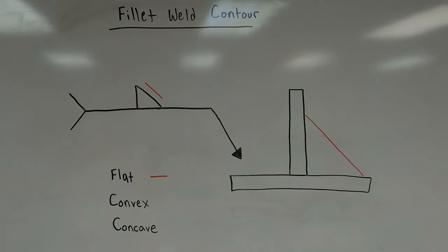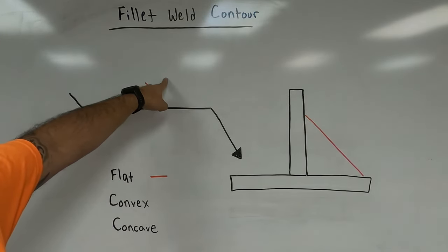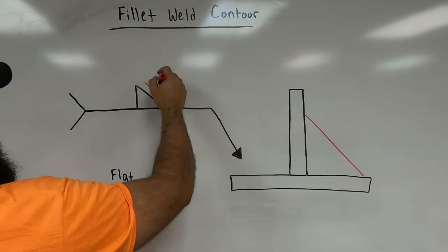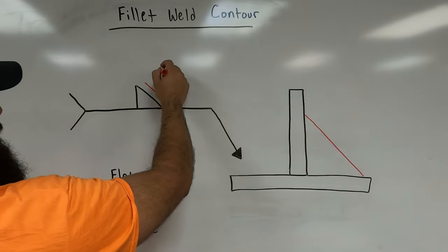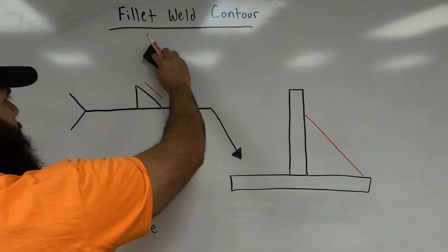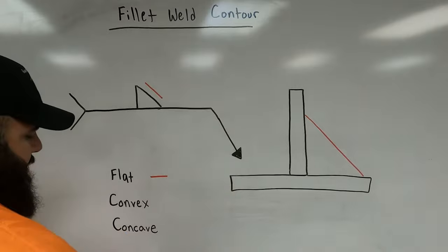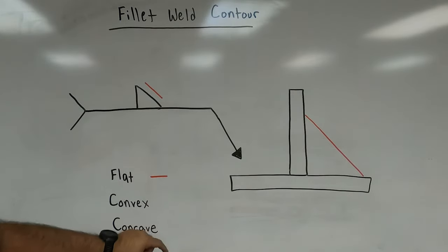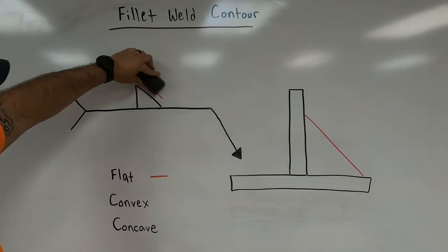Depending on your welding process and technique, you may achieve a flat weld naturally, but if special after-weld procedures are required, there are letter abbreviations accompanying the contour symbol. The letter G means grind the weld to achieve that contour; H means hammer the weld; C means chip the weld; and M means machine the weld. These letter abbreviations can appear with any of the three contour symbols — flat, convex, or concave.